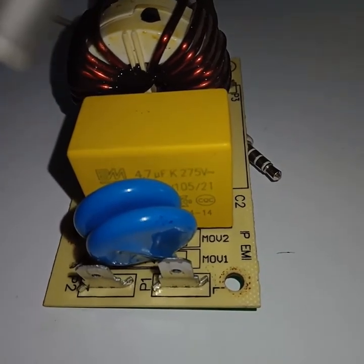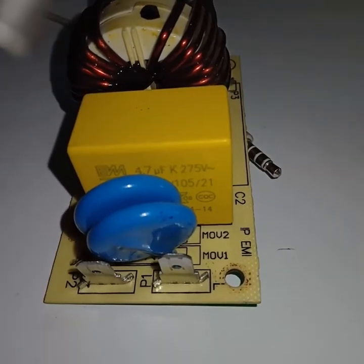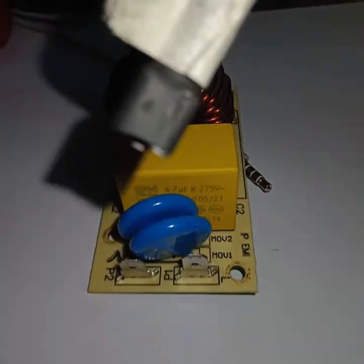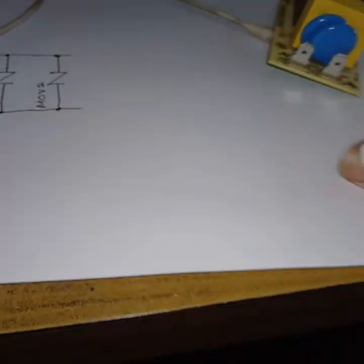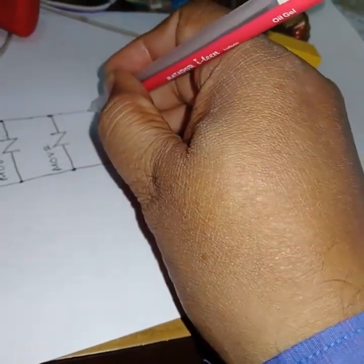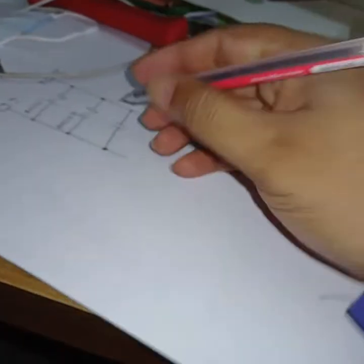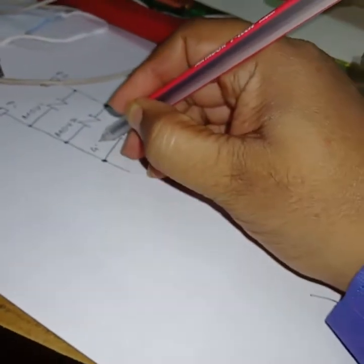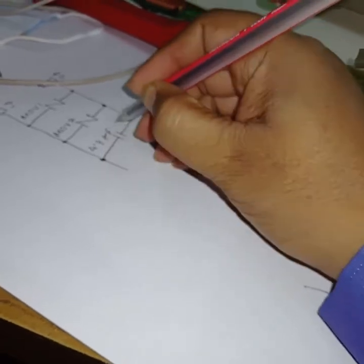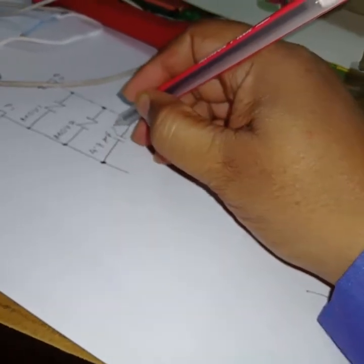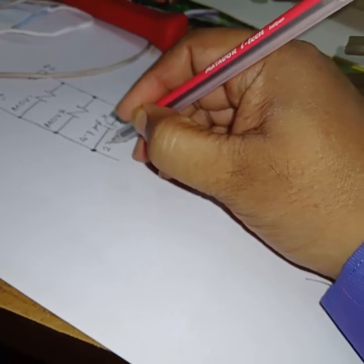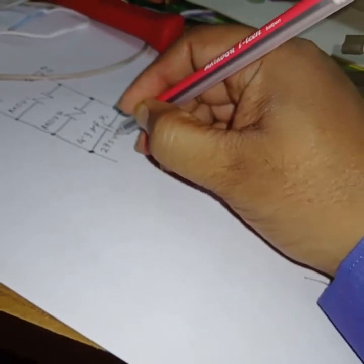The value on this capacitor is 4.7 microfarad, K-type, 275 volt AC. This is a big capacitor with a value of 4.7 microfarad K-type and a voltage rating of 275 volt AC.